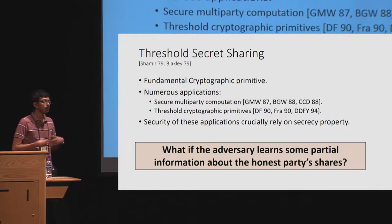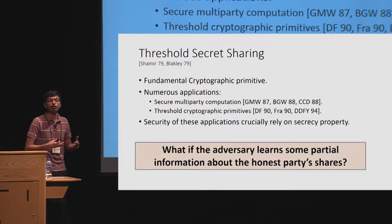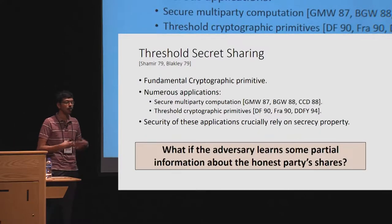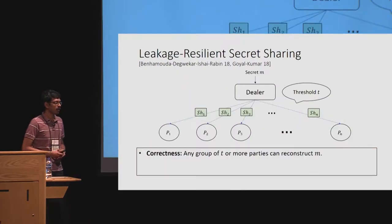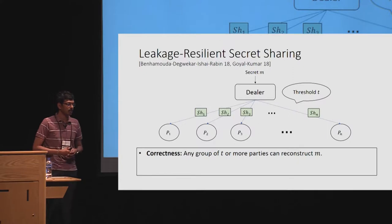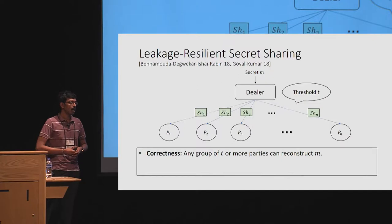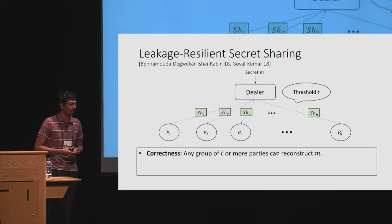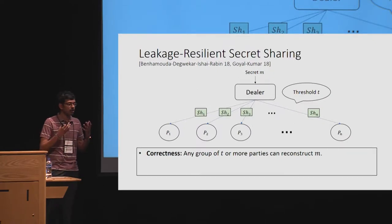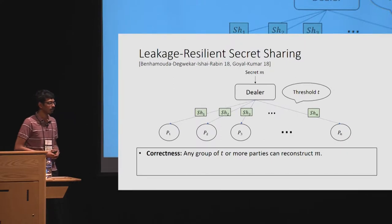This information could be leaked to the adversary via side channels on the storage devices of the honest parties. The standard privacy property does not give any guarantees under this stronger adversarial model, and hence we need a stronger notion of security. This was addressed by two independent works — one by Benhamouda et al., appearing in Crypto last year, and another by Goyal and Kumar, appearing in CCS 2018 — which introduced leakage-resilient secret sharing.